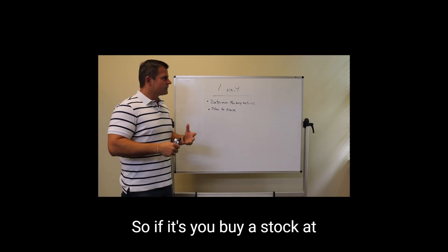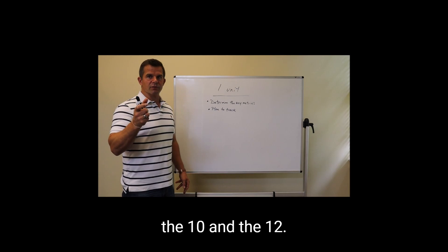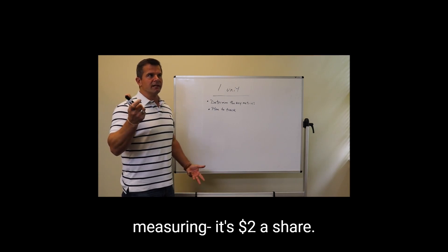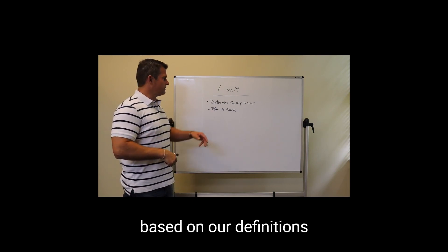So if you buy a stock at $10 and it goes up to $12, you're measuring the difference between the $10 and the $12. So we're measuring $2 per share. That's a 20% return based on our definitions that we did up here.